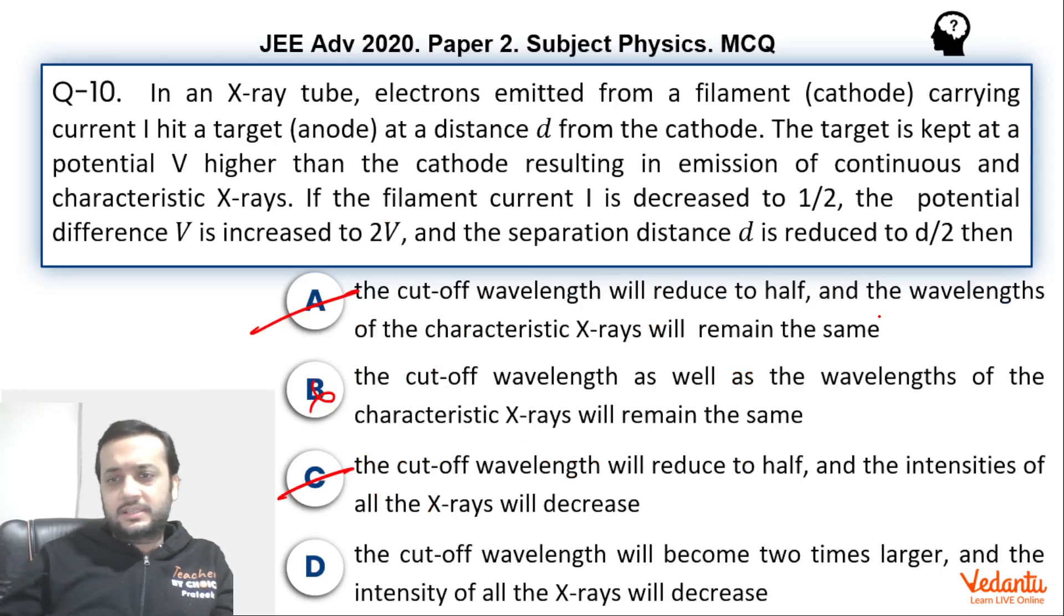But if question says that wavelength of characteristics X-rays will remain the same, I believe that what they want to ask is that the wavelengths that were getting earlier emitted. If we are talking about that wavelength, if any new wavelength is getting emitted, then there's no question of talking about being same or not, because that did not exist before. So we cannot comment. It's useless to ask whether it remains the same or not, because it is the new thing.